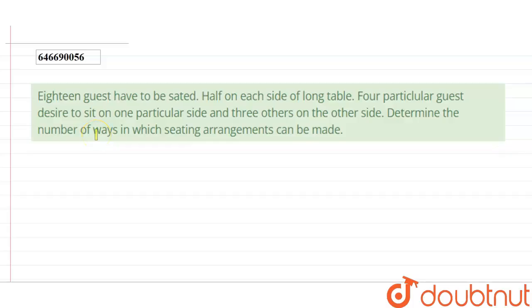Hi students, welcome to Doubtnet. Today we have to solve this problem: 18 guests have to be seated half on each side of a long table. Four particular guests desire to sit on one particular side and three others on the other side. Determine the number of ways in which seating arrangements can be made.